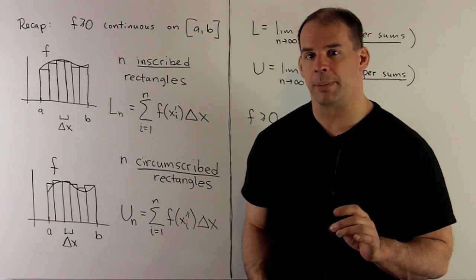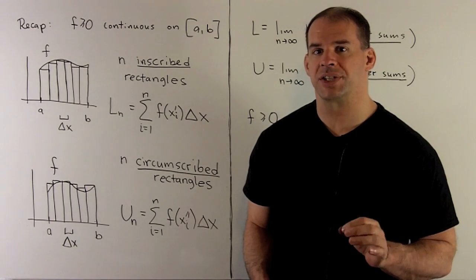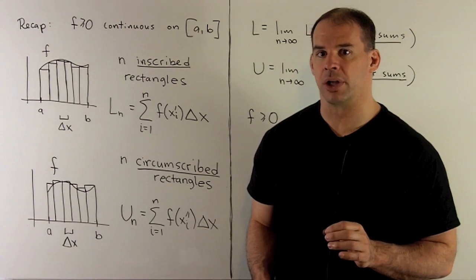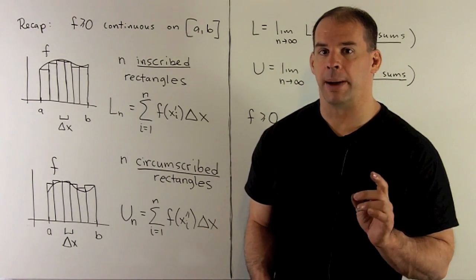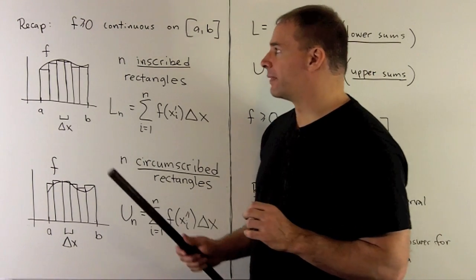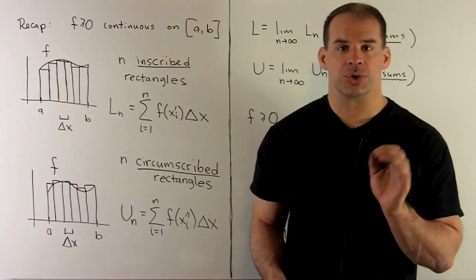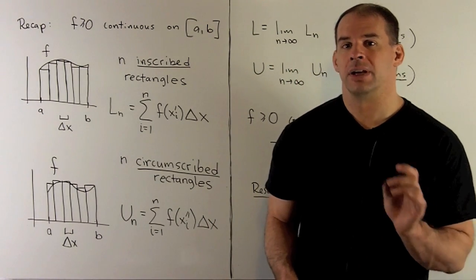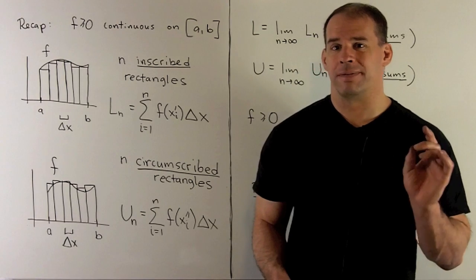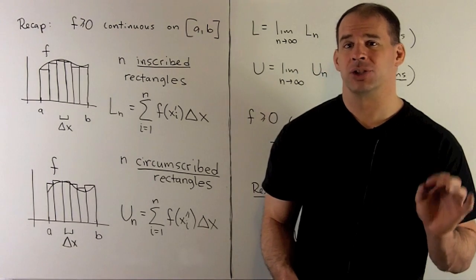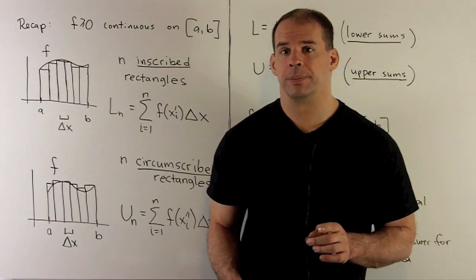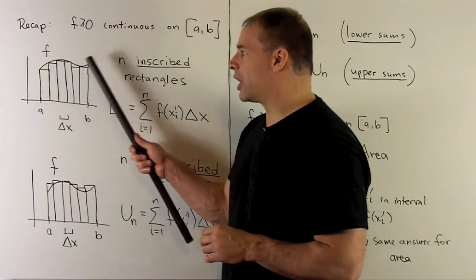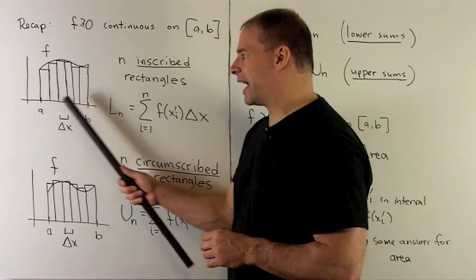Now that we have a few concrete examples of our area process, let's summarize and state some general results. Start with the function f. We'll assume it's continuous on the closed interval a, b. For now, we'll assume our function f is greater than or equal to zero on the interval. That just means the graph of our function is above the x-axis.